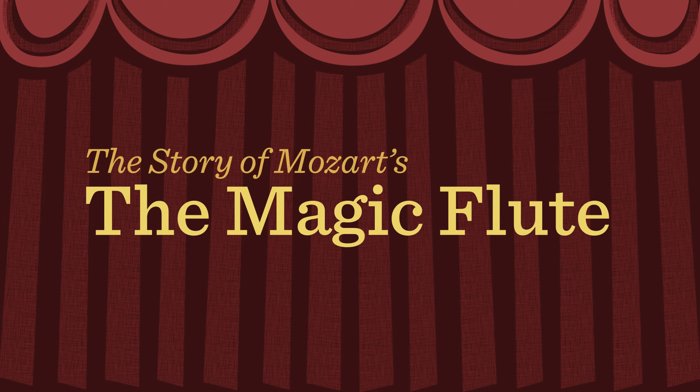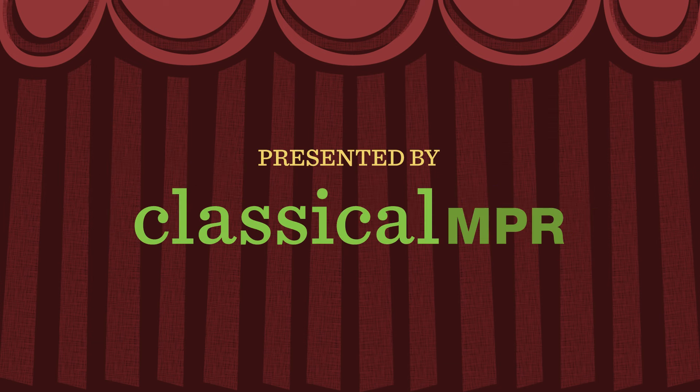The Magic Flute is a fairy tale with themes of love and good versus evil. The opera is divided into two acts.